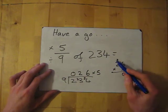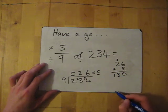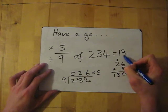5 times 2 gives me 10, carry the 3, it gives me 13. So my answer to 5 ninths of 234 is 130.